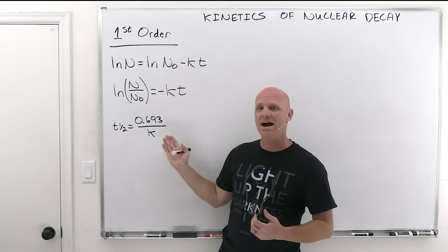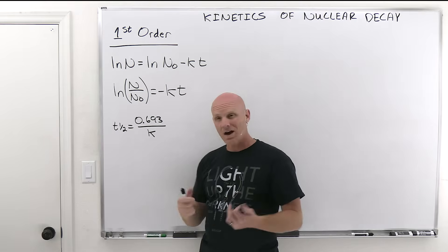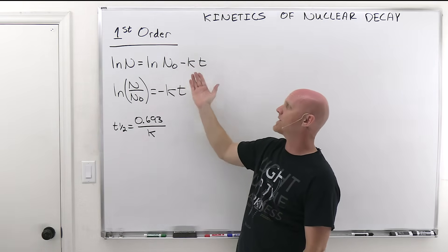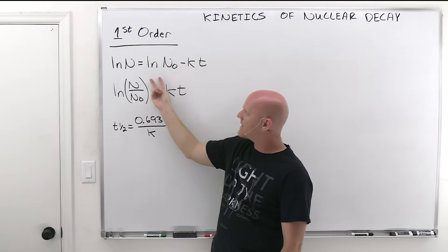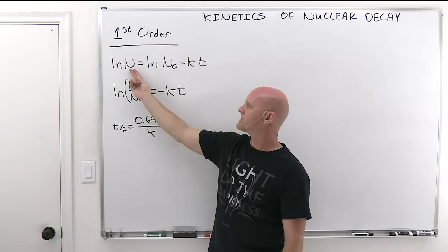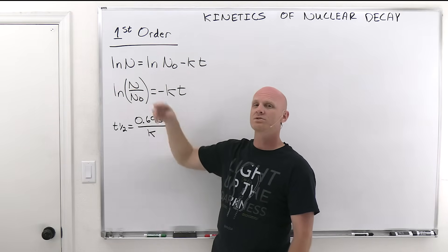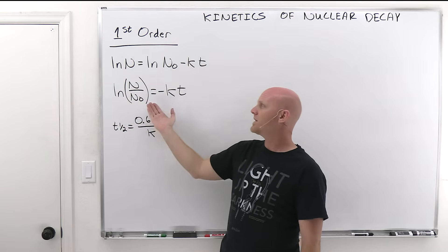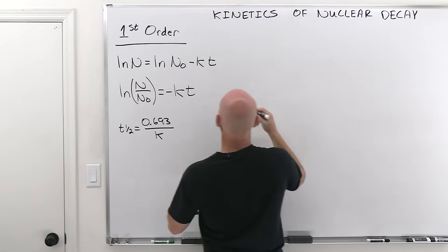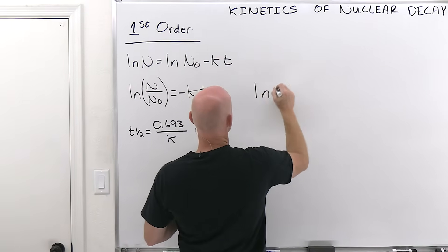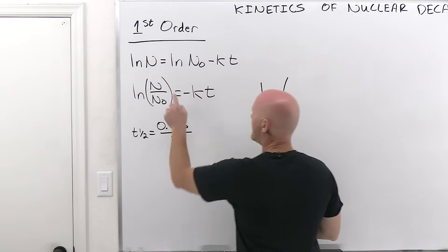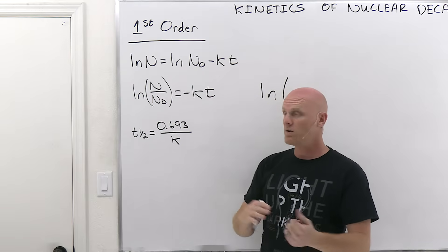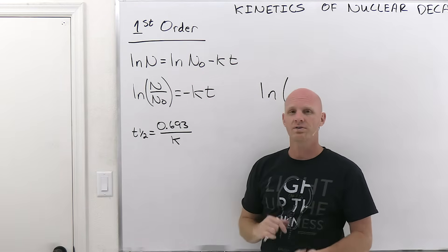We're going to derive this half-life expression because it's kind of important. If we take a look at the original first-order integrated rate law and subtract ln of n-naught to the other side of the equation, and realize that subtracting logs is the same thing as dividing them under a single log, we get this lovely equation. The natural log of n over n-naught: n is how much of that radioactive nuclide you have now, and n-naught is how much you started with.